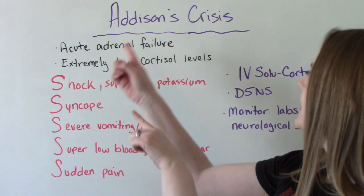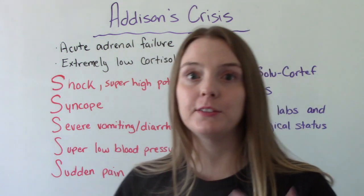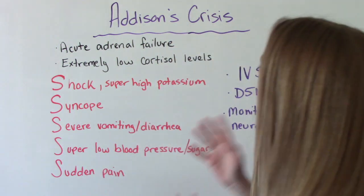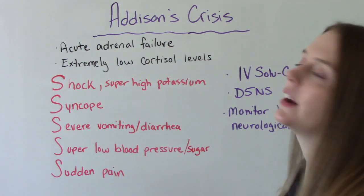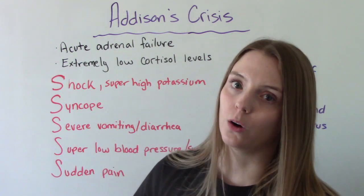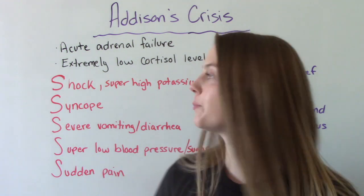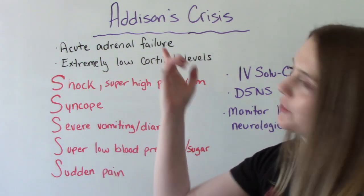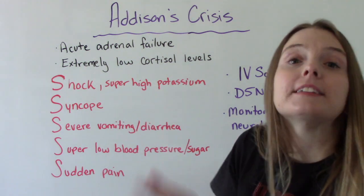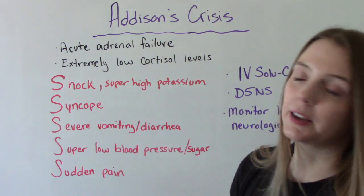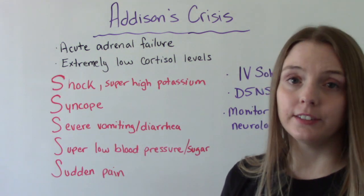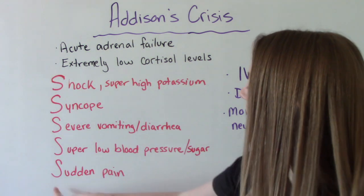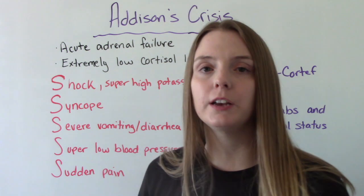Addisonian crisis, also called Acute Adrenal Failure, occurs when symptoms happen very quickly and is a medical emergency involving extremely low cortisol levels. You can remember the five S's: shock and super high potassium levels; syncope; severe vomiting or diarrhea; super low blood pressure and low blood sugar; and sudden pain, typically in the abdomen or the legs.